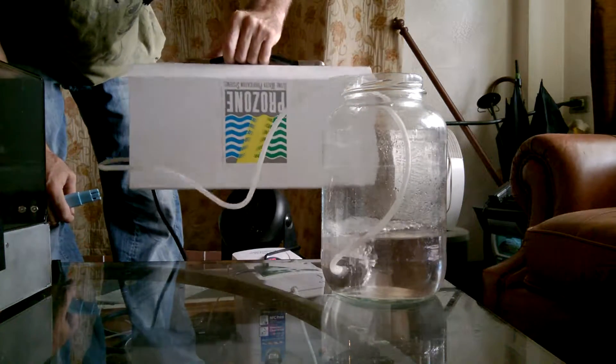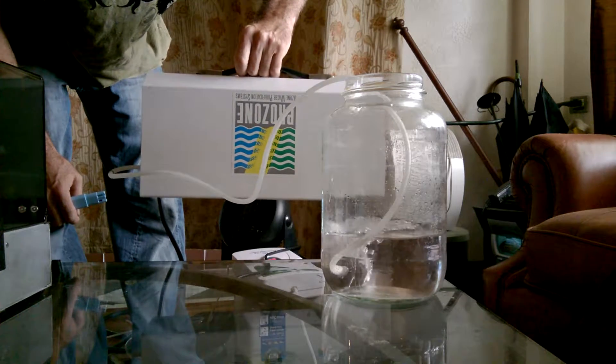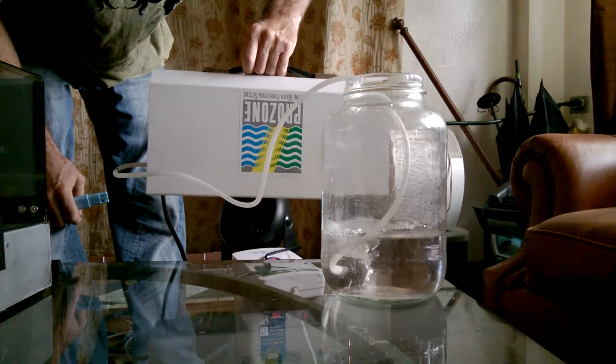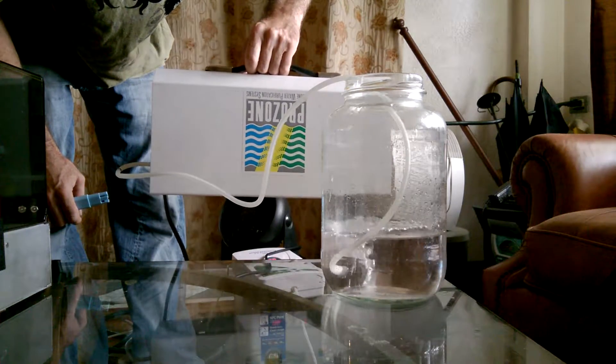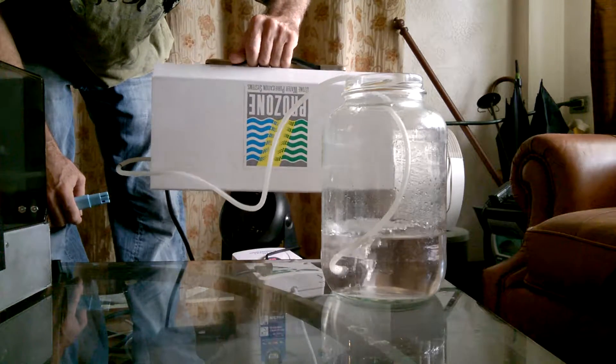The machine we use, the main one, is the Prozone Z5 unit. It'll do up to 800 gallons.